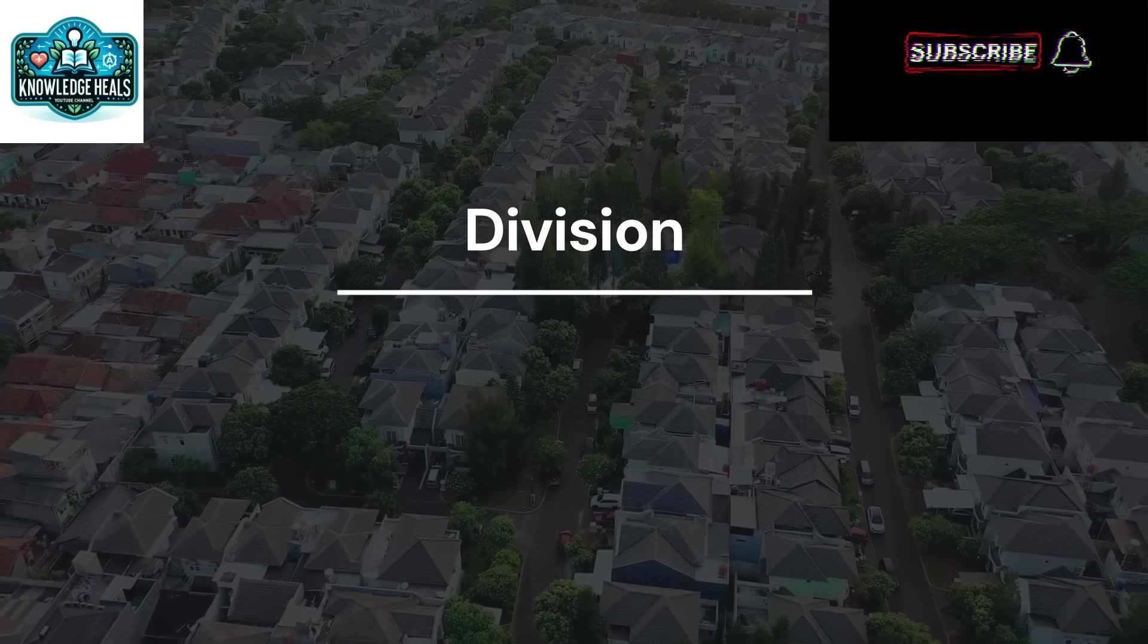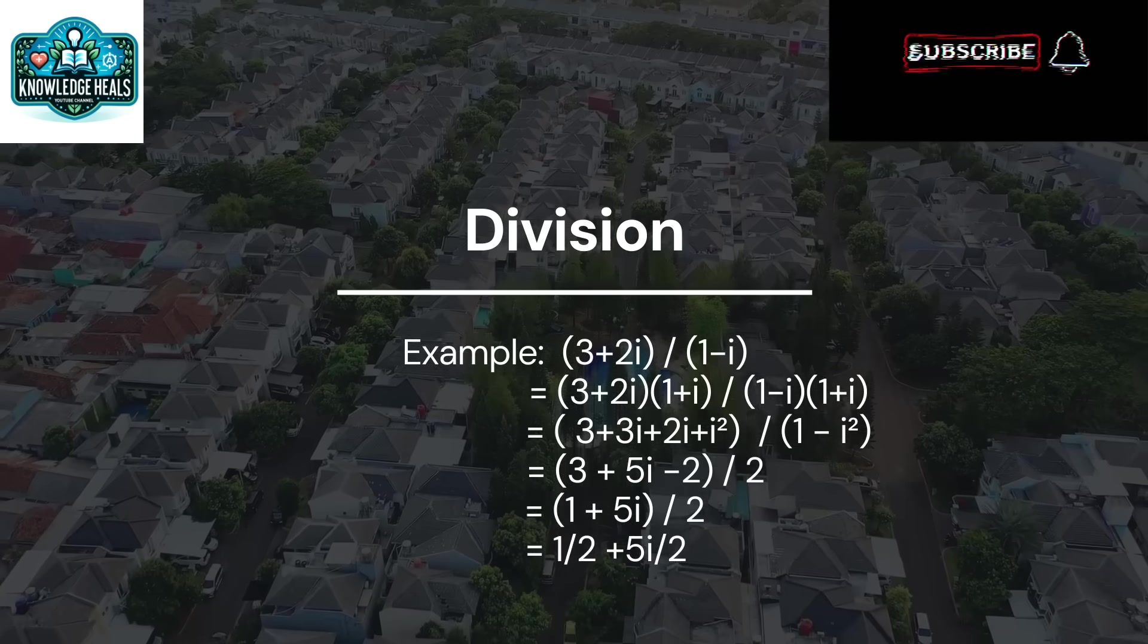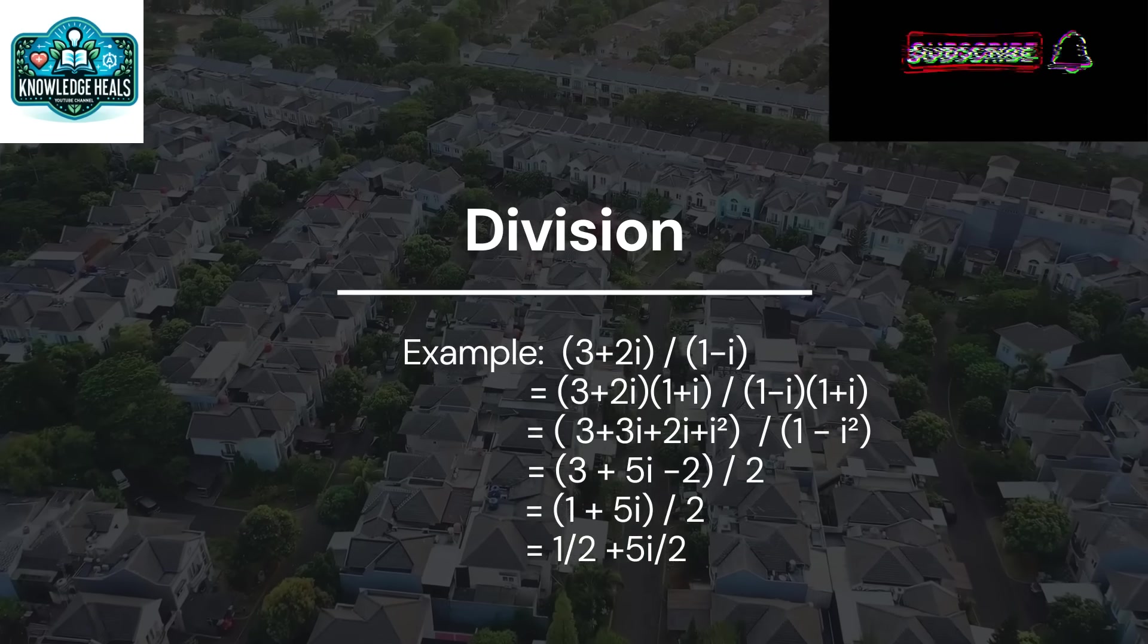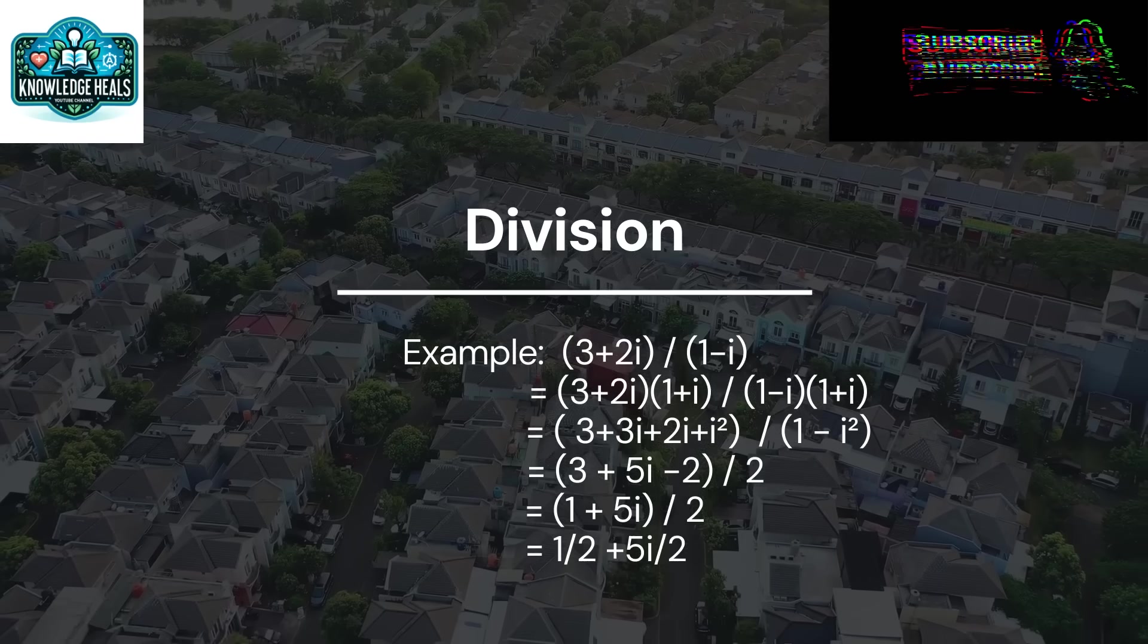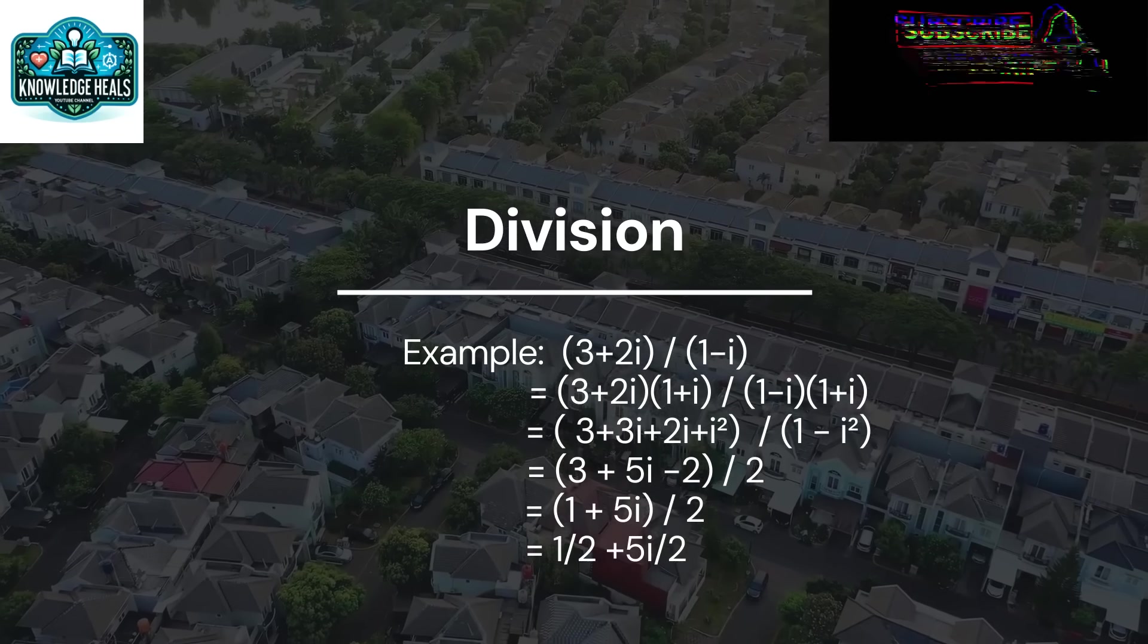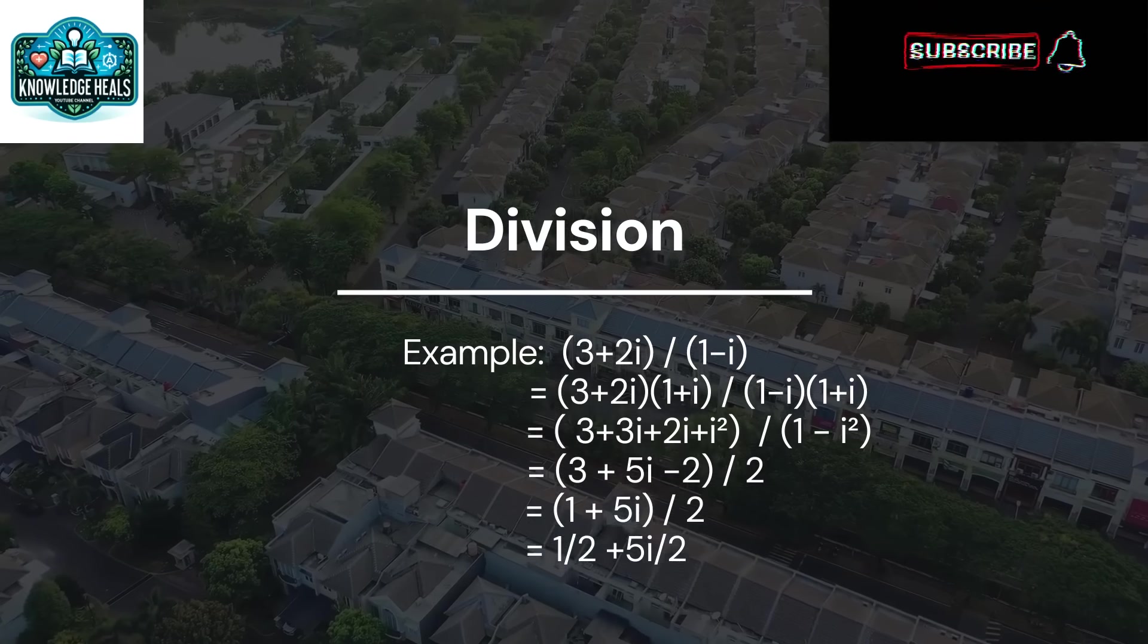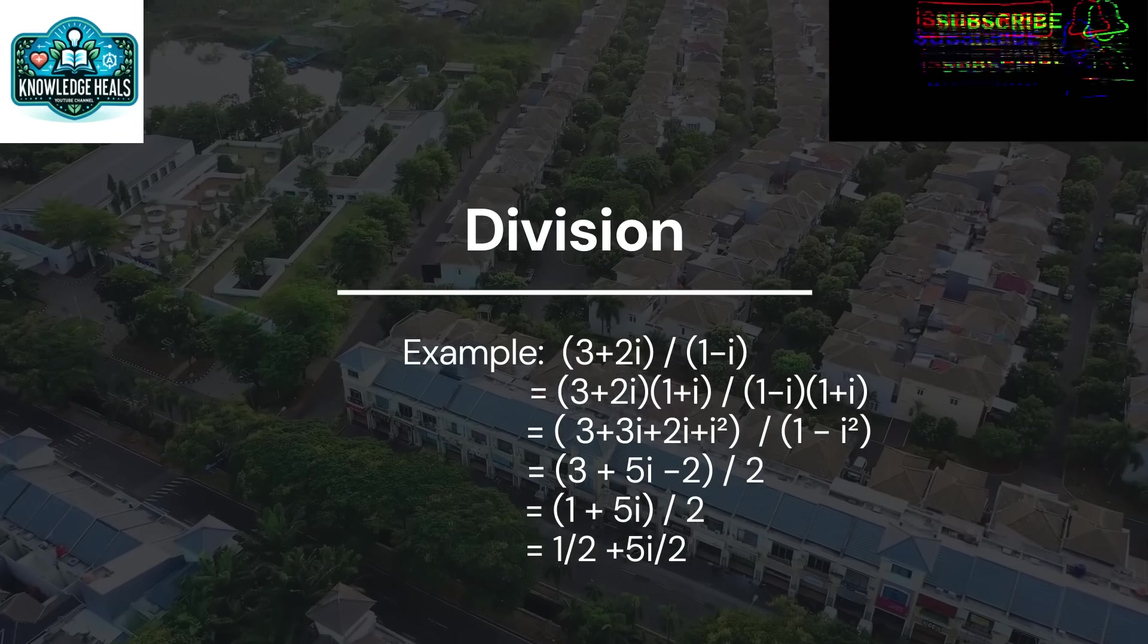Division of complex numbers involves multiplying the numerator and denominator by the conjugate of the denominator. Here's an example. 3 plus 2I divided by 1 minus I multiplied by the conjugate of the denominator 1 plus I. Equal to 3 plus 2I multiplied by 1 plus I, which is divided by 1 minus I multiplied by 1 plus I. Equal to 3 plus 3I plus 2I plus 2I squared divided by 1 minus I square. Equal to 3 plus 5I minus 2 divided by 2. Equal to 1 plus 5I divided by 2.